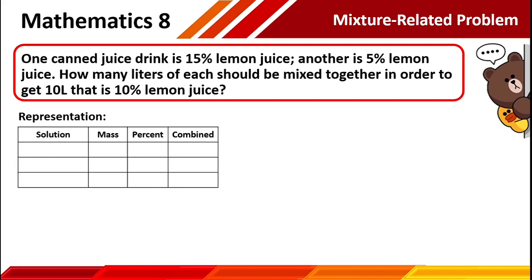The first thing is to do the representation. Let's identify first what are the drinks or solutions involved in this given problem. The first one is lemon juice number 1, and the second one is lemon juice number 2. In lemon juice number 1, it is stated that it has 15% lemon juice, or the concentration of lemon juice is 15%. We are looking for the mass of lemon juice because we want to combine it with lemon juice number 2. That's why it is unknown, therefore we use variable x. The mass of lemon juice number 2 is also unknown, but the percentage of concentration of lemon juice number 2 is 5%.